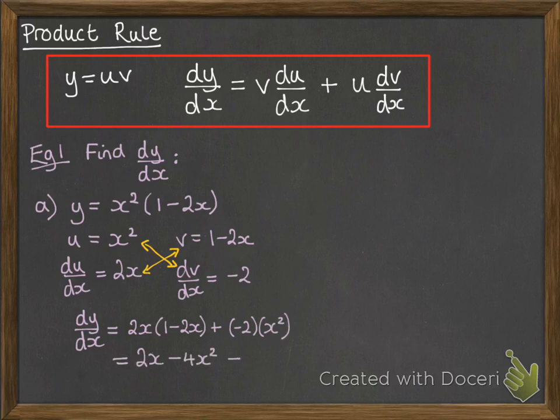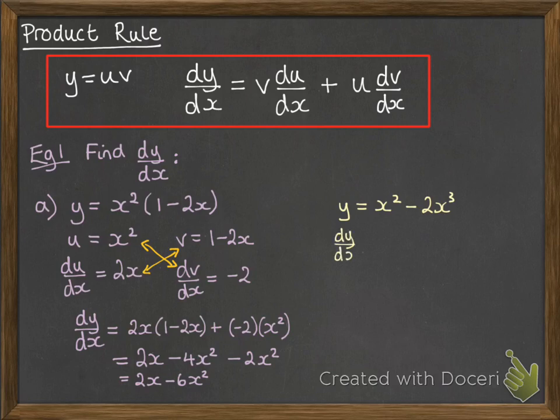And if we multiply out and simplify this, we get the following. Now we can actually check this one because normally if you'd have got that, you would have just multiplied out the bracket and then differentiated it. So if we do that, we get the same answer here. Now, you need to know the product rule for things later on where we can't do that expanding of the brackets. At the moment, we're keeping things fairly simple. You'll see where this leads to later on.